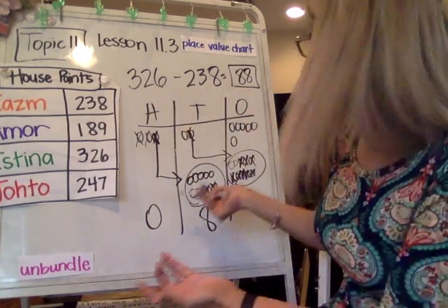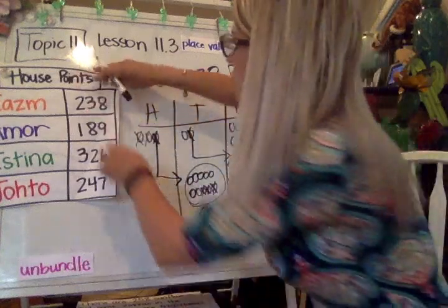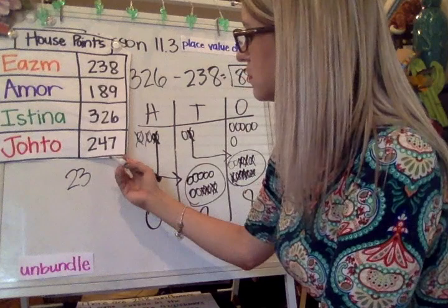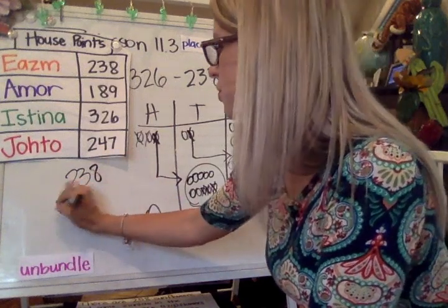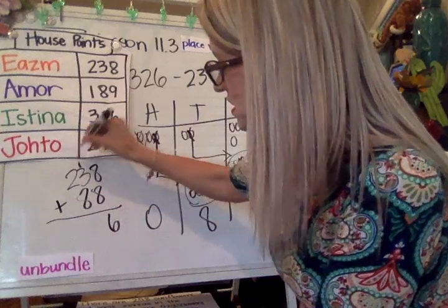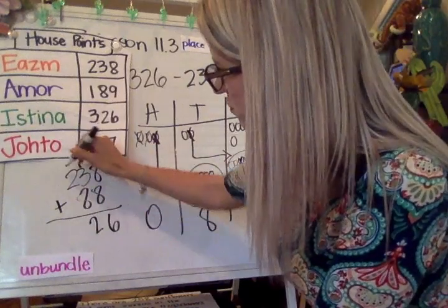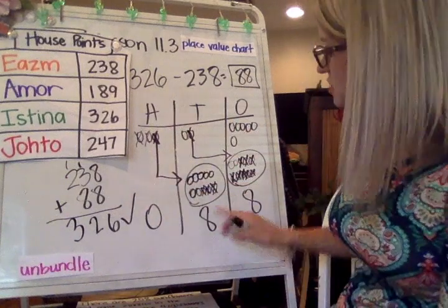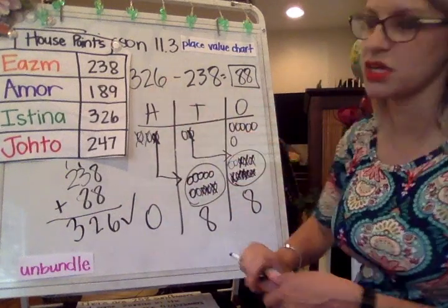Remember you need to check with addition. So 238. I'm going to just do a scoot. And I hope you did this on your paper when you were solving. 8 plus 8 is 16. I've got 12 here. 326 does match with 326. So 88 is the correct difference between these two.